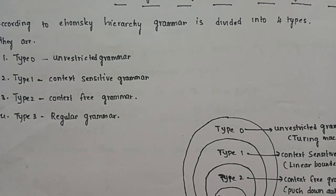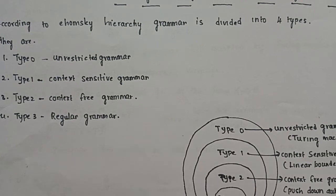These different types of machines accept different languages. A language is nothing but a set of strings. When you use a set of strings, you can form a particular language, and when you use a particular string, you can use a grammar. Grammar contains a set of rules to form a particular language.